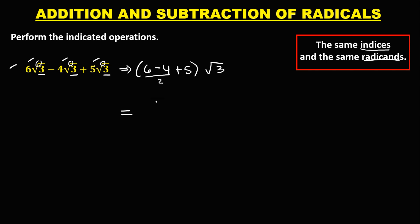And 2 plus 5 is 7, then bring down the square root of 3. So the answer is 7√3.